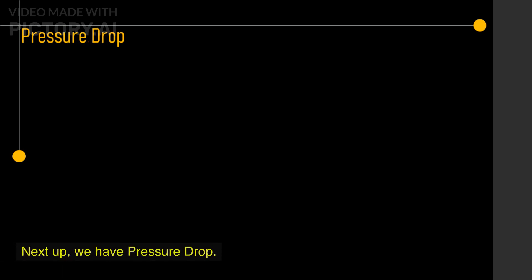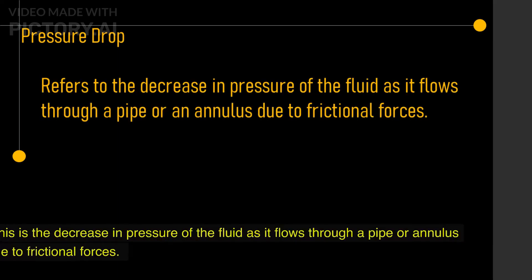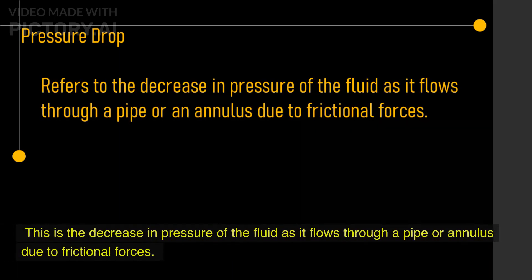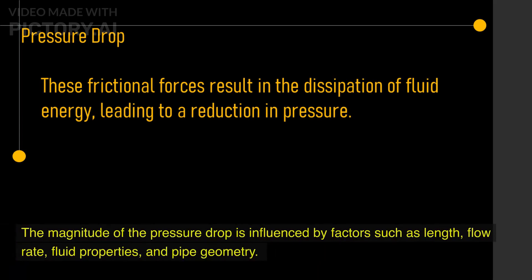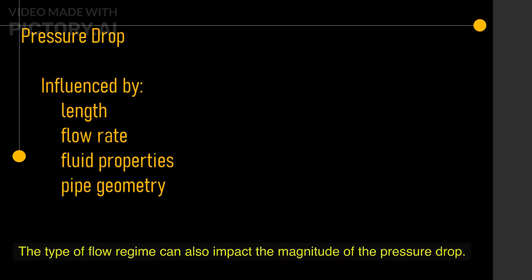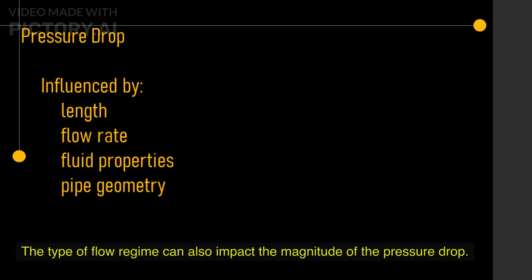Next up, we have pressure drop. This is the decrease in pressure of the fluid as it flows through a pipe or annulus due to frictional forces. The magnitude of the pressure drop is influenced by factors such as length, flow rate, fluid properties, and pipe geometry. The type of flow regime can also impact the magnitude of the pressure drop.